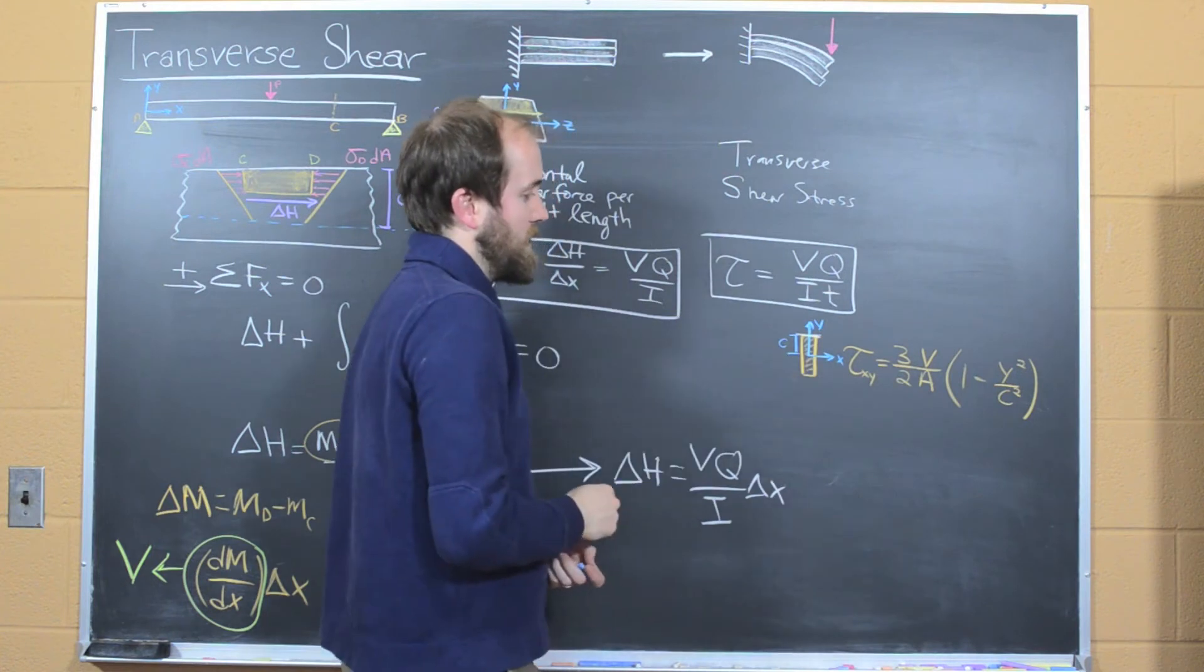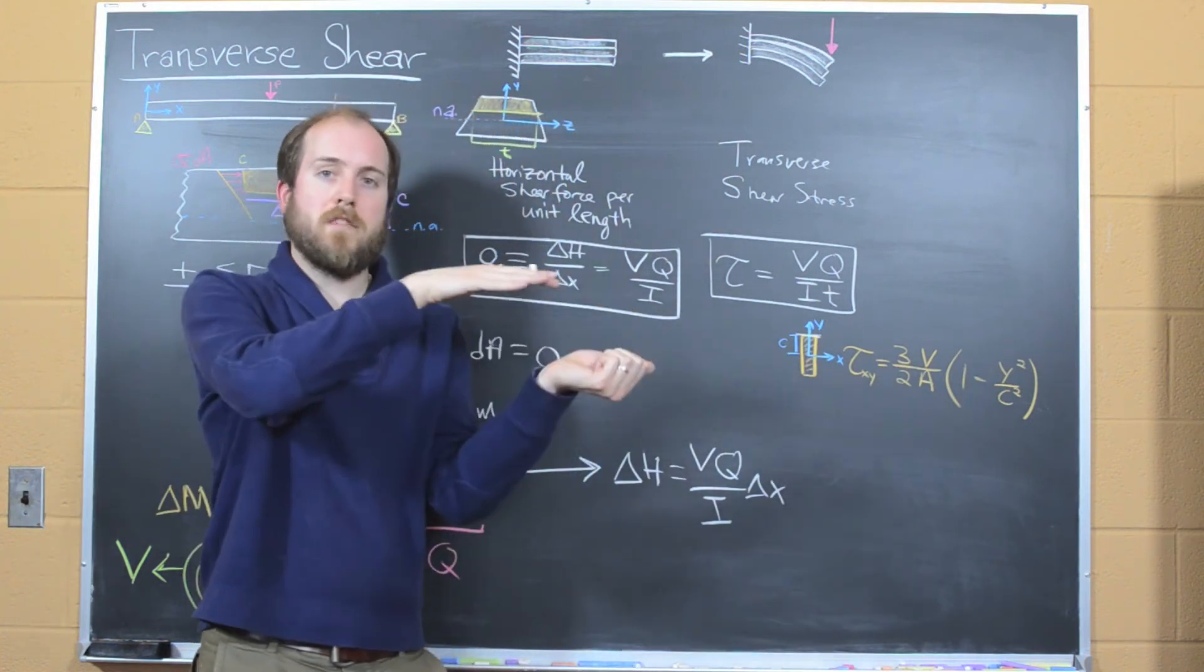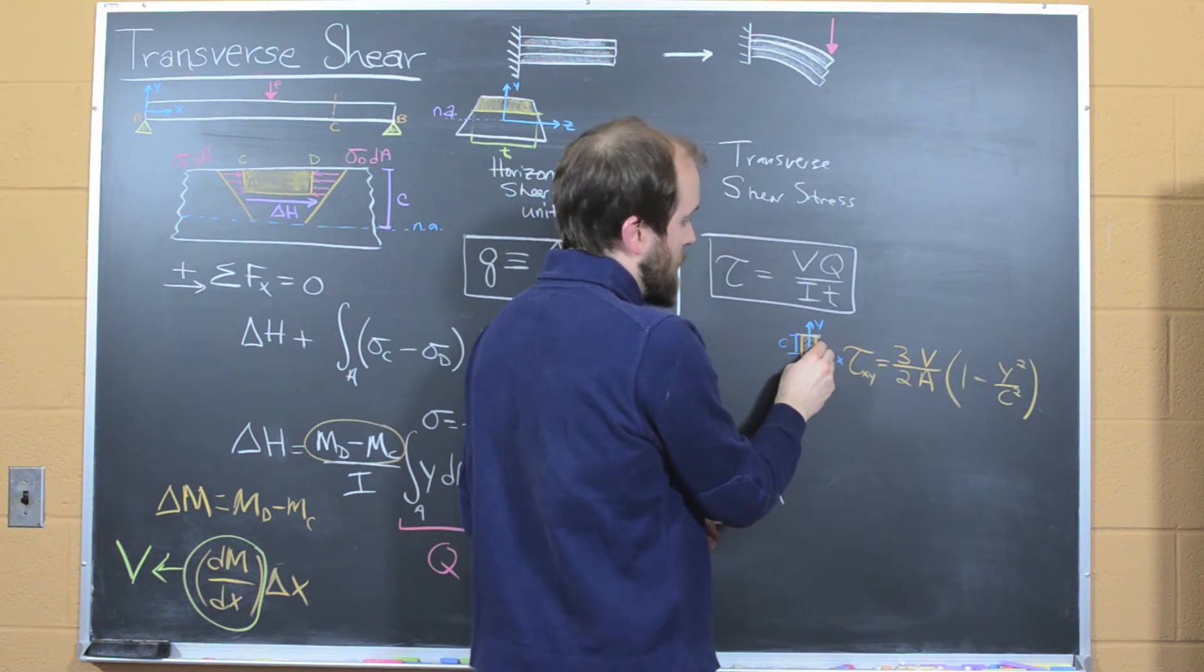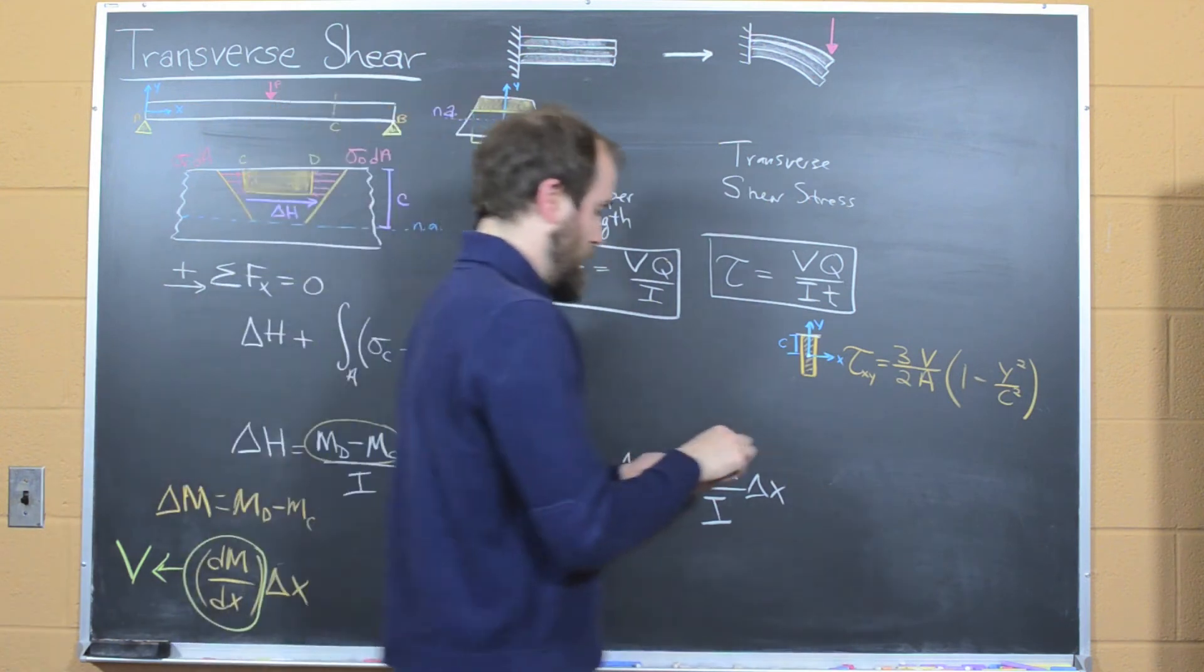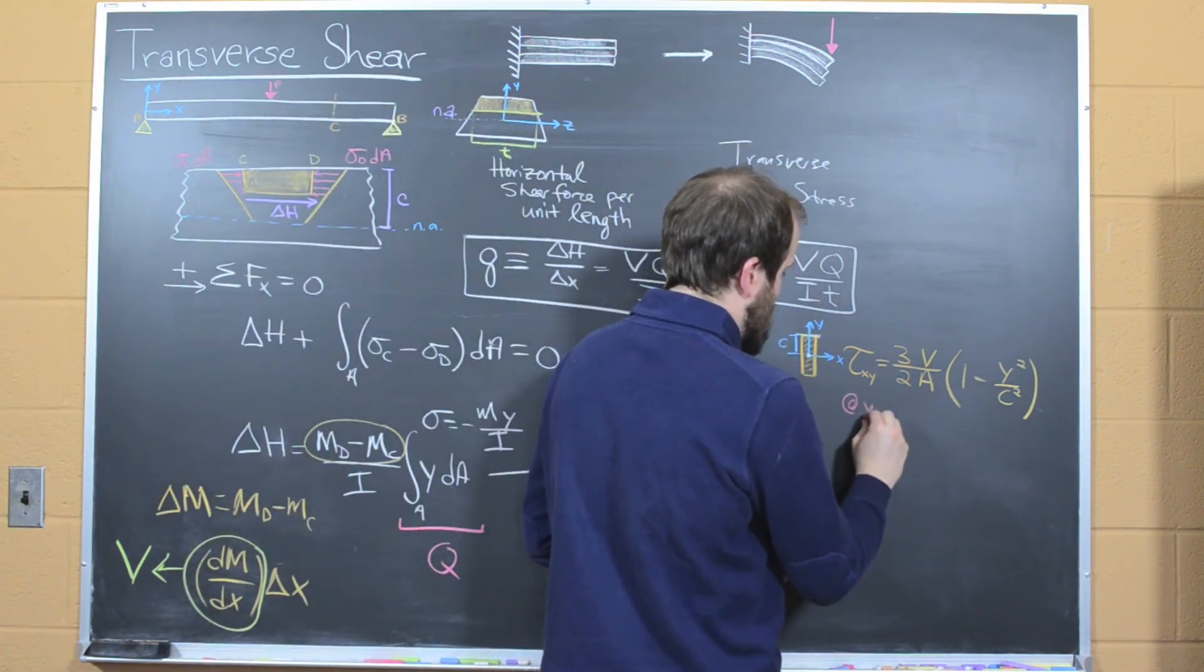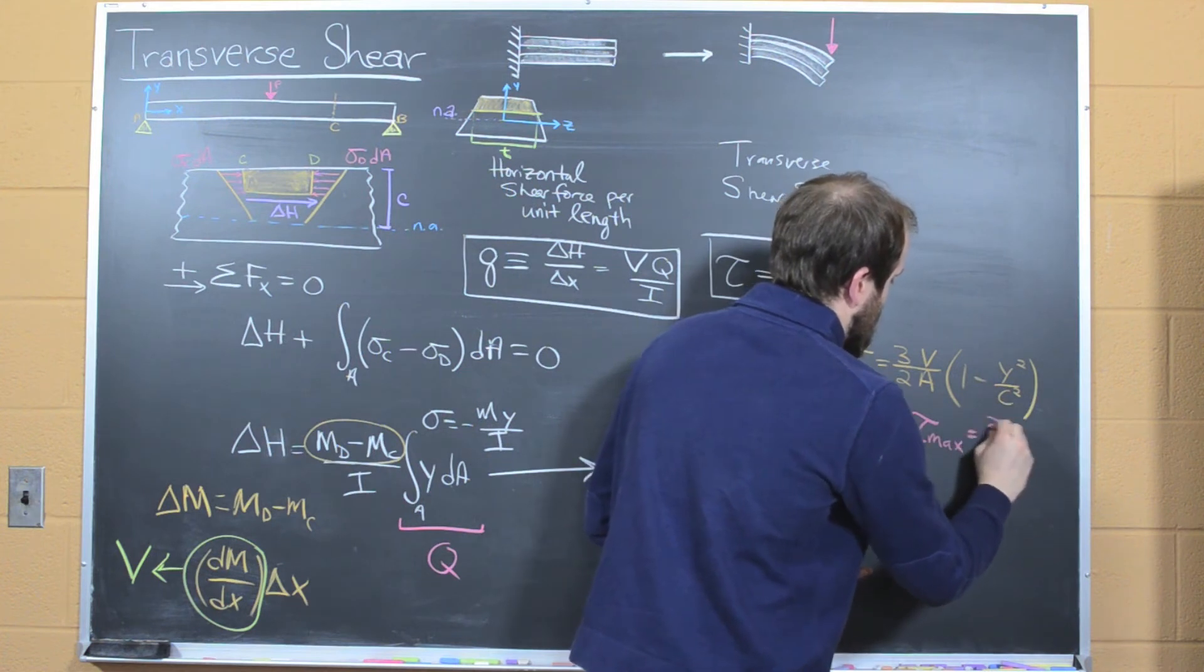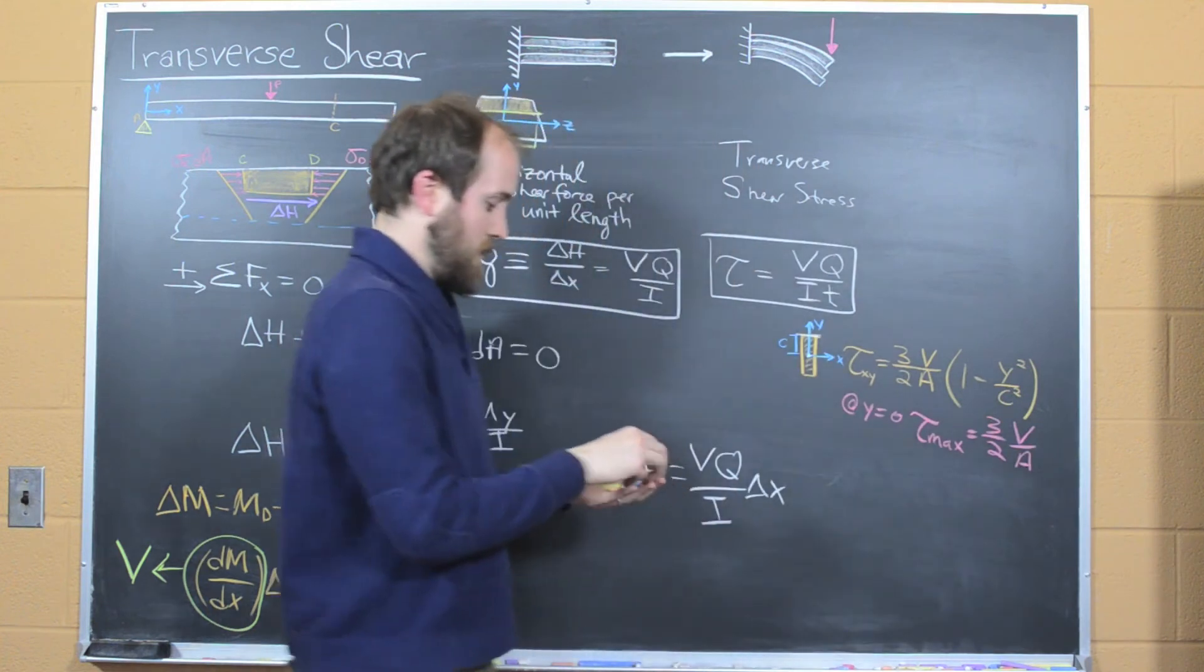So if y is equal to c, if we're at the outer surface of our rectangular beam, there's going to be no shear stress there. And that makes sense, because there's nothing on top of it shearing this rectangular plate. If y is equal to 0, so if we're down here, y is equal to 0, this term goes away, and we'll see that we're at our maximum shear stress. So when y equals 0, we get our maximum shear stress, which would be tau max equals 3/2 V over A. That's in the case of a rectangular cross section.